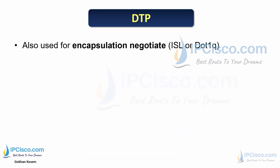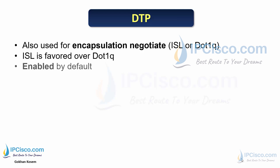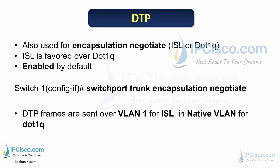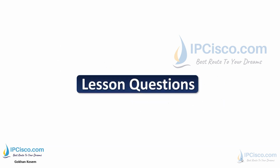DTP is also used for encapsulation negotiation — to determine the trunking protocol used, ISL or 802.1Q. If there are two different configs, ISL is favored and is enabled by default. To configure encapsulation negotiation, we use the 'switchport trunk encapsulation negotiate' command. DTP frames are sent over VLAN 1 for ISL, and over the native VLAN for 802.1Q.